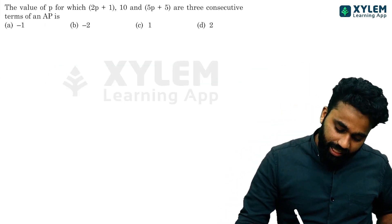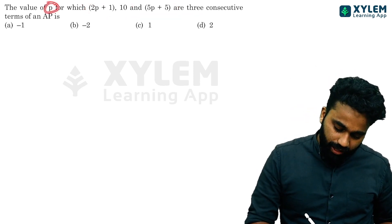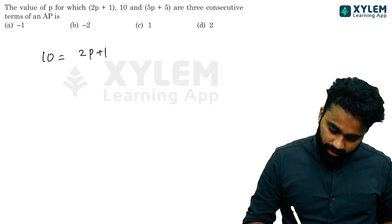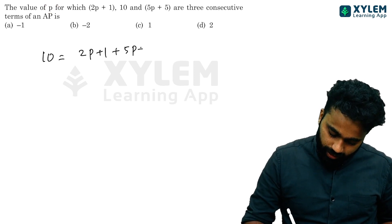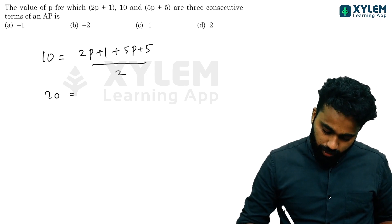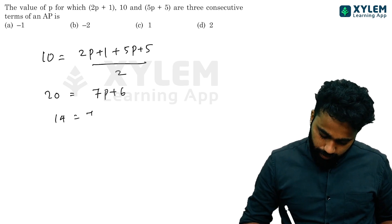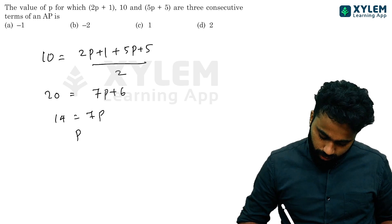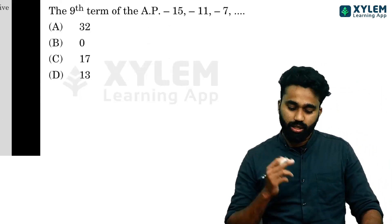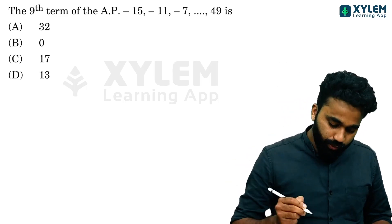The value of p for which 2p, 20, and 5p plus 6 are consecutive terms: the middle term equals first term plus last term divided by 2. So 20 equals 2p plus 5p plus 6 divided by 2. Therefore 40 equals 7p plus 6, so 7p equals 34, wait—let me recalculate. 40 equals 7p plus 6, so p equals 2.